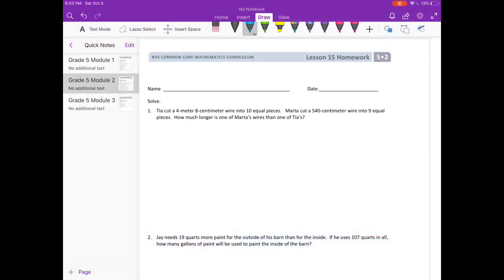Lesson 15 homework, number one. Tia cut 4 meters 8 centimeters wire into 10 equal pieces. Marta cut a 540 centimeter wire into nine equal pieces. How much longer is one of Marta's wires than one of Tia's? So Tia's is 4 meters 8 centimeters and Marta is 540 centimeters. Since Marta's is already in centimeters, I'm going to convert Tia's into centimeters.